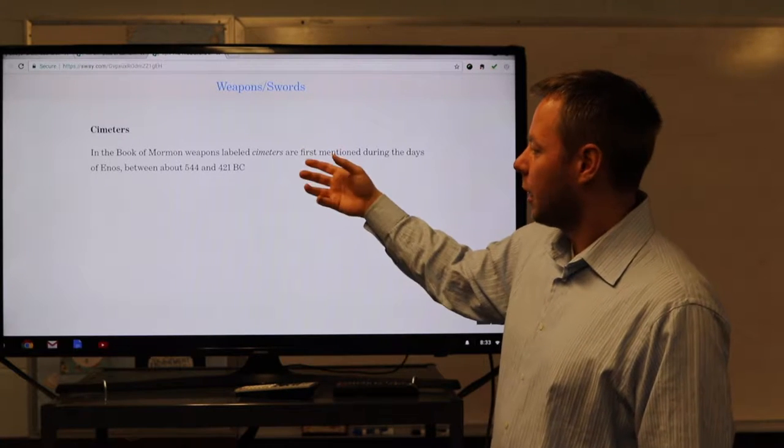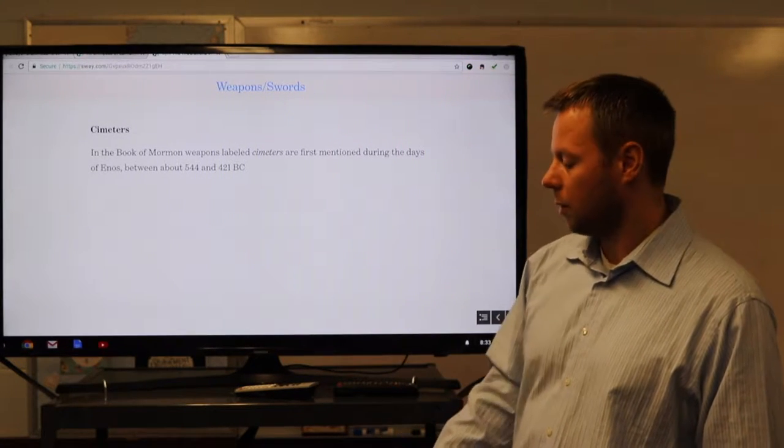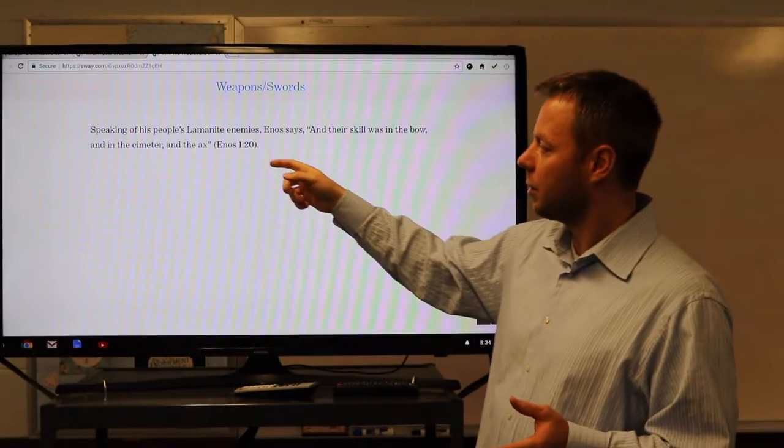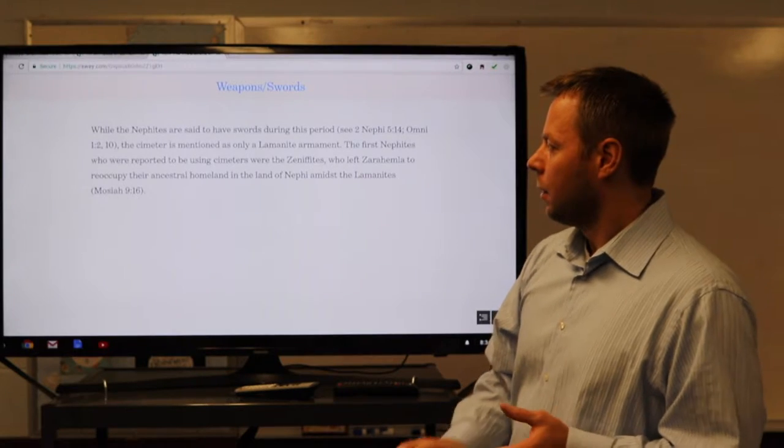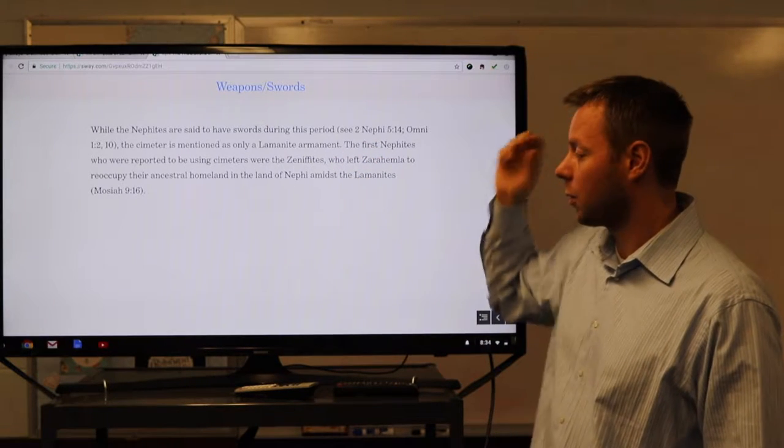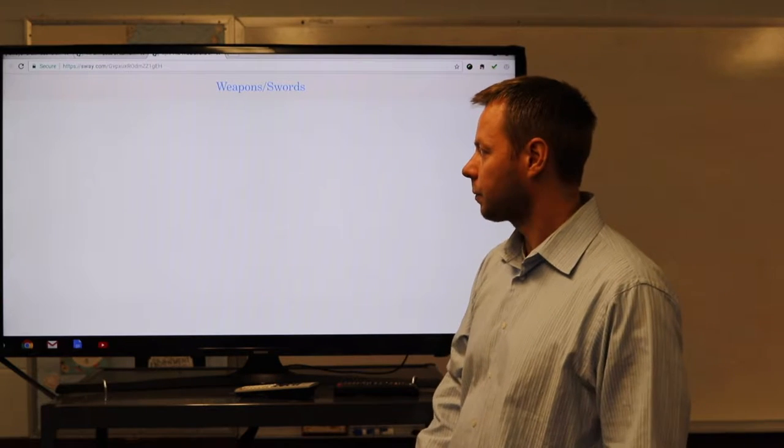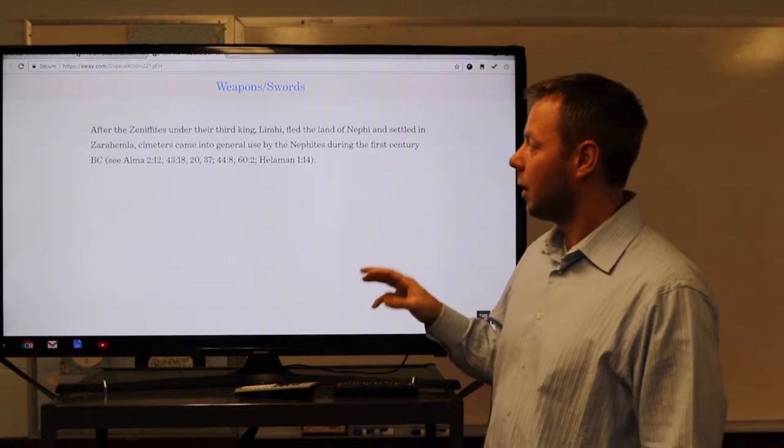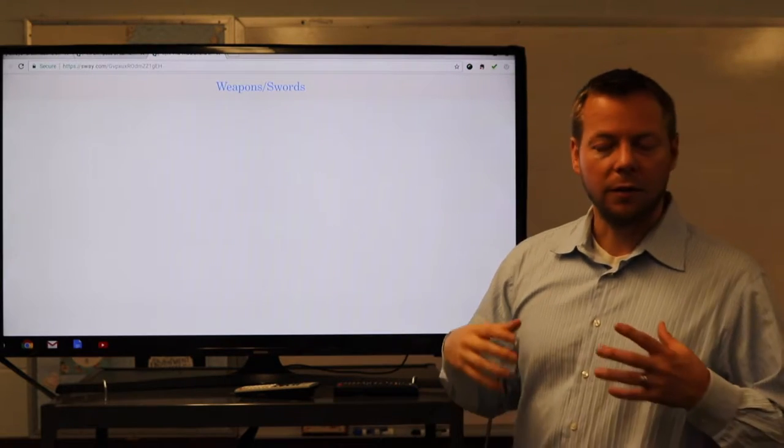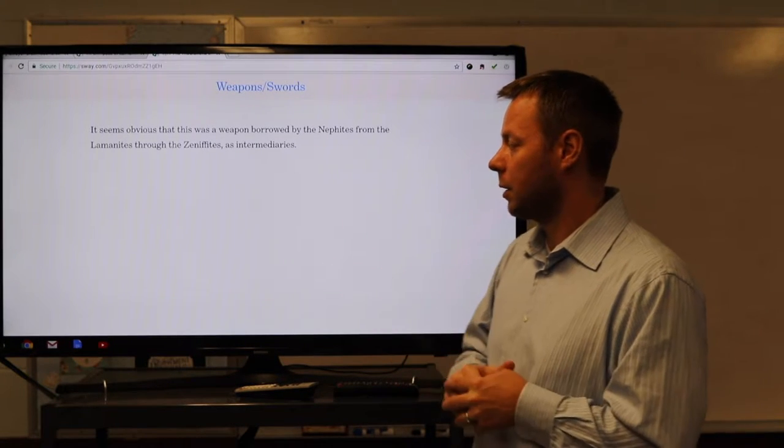Scimitars in the Book of Mormon. We get this label that it's first mentioned in Enos, so about 544. And then the last mention we have is 421 B.C. Enos says, and he's speaking about his Lamanite enemies, that their skill was in the bow, and in the scimitar, and in the axe. When the Nephites were said to have swords during this period, the scimitar is mentioned only as a Lamanite weapon to start with. The first Nephites who were reported to use them were the Zenophites, who, remember, left Zarahemla to reoccupy their ancestral homeland in the land of Nephi, which was amidst the Lamanites. After the Zenophites, under their third king, Limhi, fled the land of Nephi, and settled in Zarahemla, scimitars came into general use by the Nephites during the first century B.C. So it's pretty clear that the scimitar was a weapon that was borrowed from the Lamanite culture by the Nephites through the Zenophites as intermediaries.